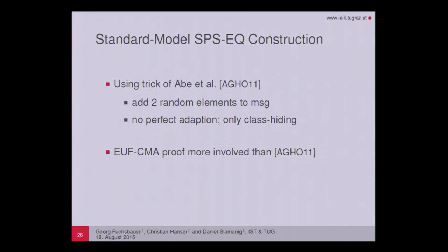Regarding the standard model construction for SPS-EQ, it is a rather restricted construction since it is only class-hiding. It is derived using a technique where two random elements are included as additional components in the messages, which are then signed additionally and included in the signatures. The UF-CMA proof here is more involved than the one by Abe et al.